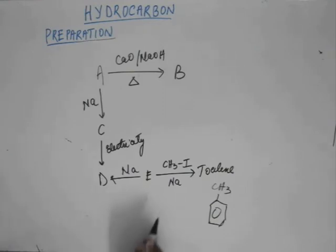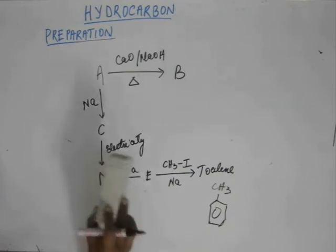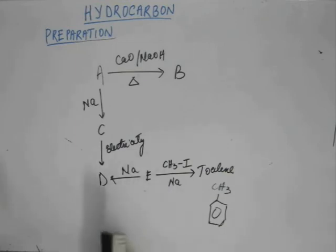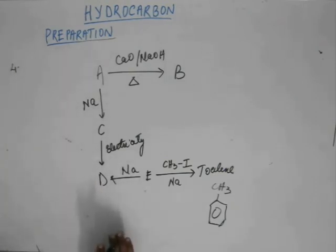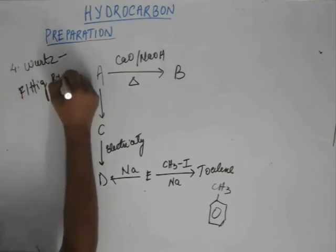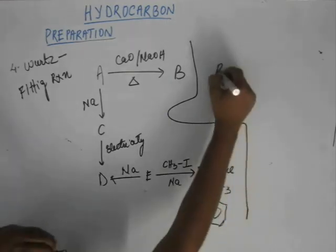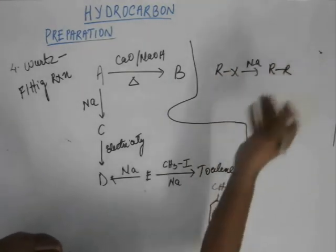I sense that from E to toluene there is a reaction I haven't taught formally, but there's nothing new — you can do it based on Wurtz reaction. Still, I feel the obligation to teach it first, even if it is trivial. The fourth reaction, very similar to Wurtz reaction, is called the Wurtz-Fittig reaction. It is just an extension of the concept of Wurtz reaction. In Wurtz reaction, we have R-X and sodium, which gives us R-R.